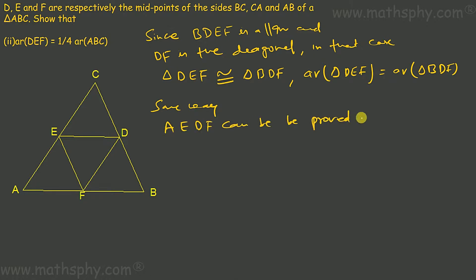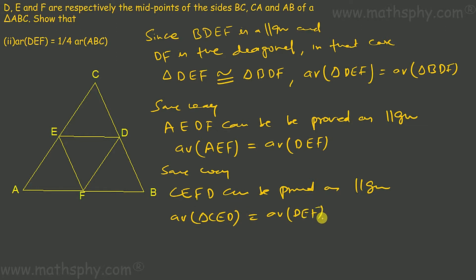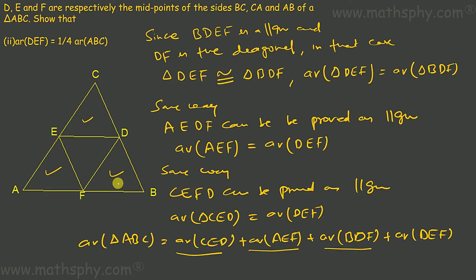When AEDF is a parallelogram, area of triangle AEF will be equal to area of triangle DEF. Similarly, CEFD can be proved to be a parallelogram. In that case, area of DEF equals area of CEDregion, area of DEF equals area of AEF, and area of DEF equals area of BDF. So now, area of triangle ABC equals area of CED plus area of AEF plus area of BDF plus area of DEF.